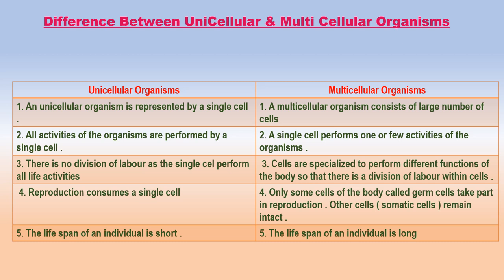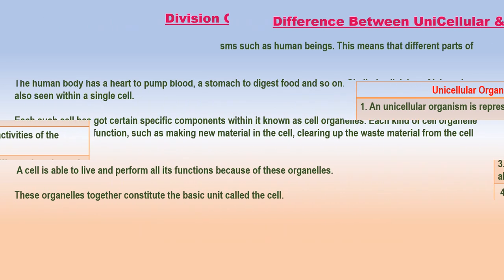A unicellular organism is represented by a single cell. All activities of the organism are performed by that single cell. There is no division of labor, as the single cell performs all life activities. Reproduction involves a single cell, and the life span of an individual is short. In multicellular organisms, a large number of cells are present. A single cell performs one or few activities. Cells are specialized to perform different functions — division of labor — and only some cells, called germ cells, take part in reproduction. The life span of an individual is long.